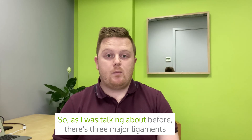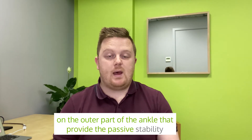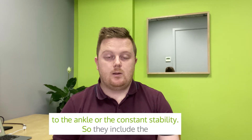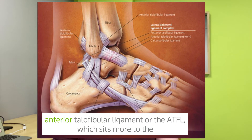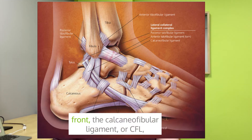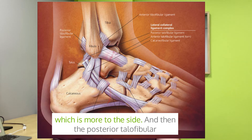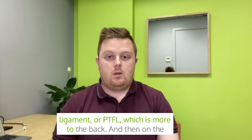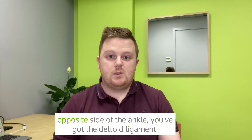There are three major ligaments on the outer part of the ankle that provide the passive stability — or the constant stability — to the ankle. They include the anterior talofibular ligament, or ATFL, which sits more to the front; the calcaneofibular ligament, or CFL, which is more to the side; and then the posterior talofibular ligament, or PTFL, which is more to the back.